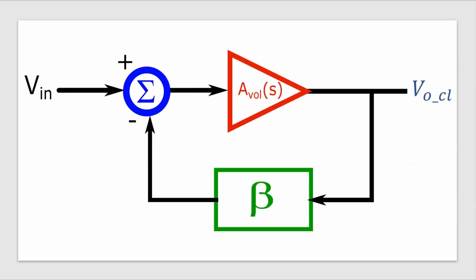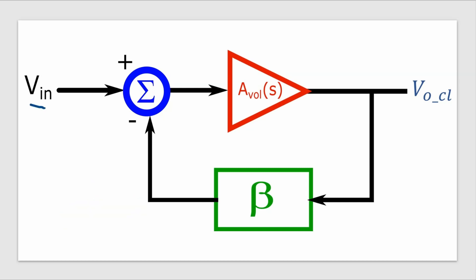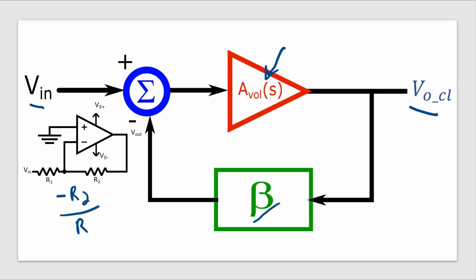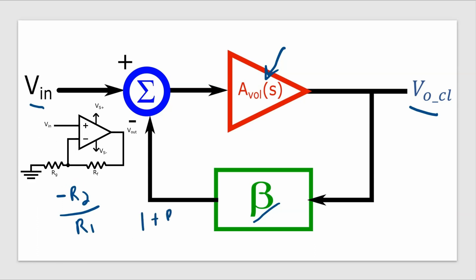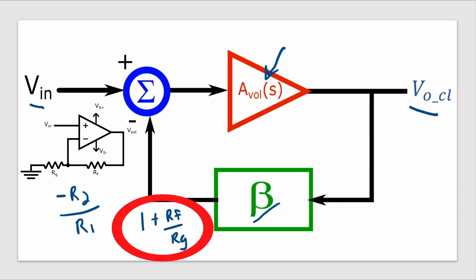Before getting into specific op-amp configurations, let's take a look at this general control system block diagram with a basic negative feedback loop. We have the input voltage, the output voltage, the open-loop gain of the op-amp, and a feedback element multiplied by beta. Beta for an op-amp circuit — like the inverting or non-inverting configuration — depends on the components in the feedback network. For the inverting amplifier, the gain is negative R2 over R1, and that value is 1 over beta. For the non-inverting configuration it's 1 plus the feedback resistor over the ground resistor, and that value is also 1 over beta for that circuit.